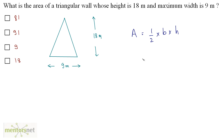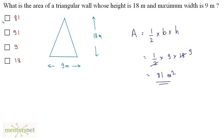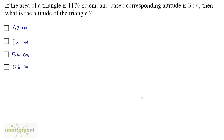So half into base 9 into height 18. Two times 9 is 18, so 9 times 9 is 81 meter square. Option A is the correct answer.